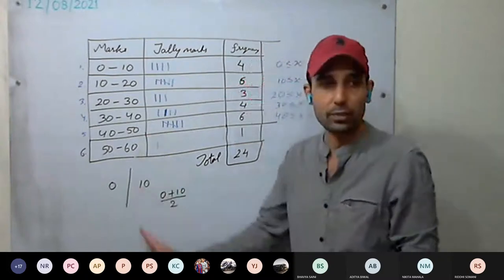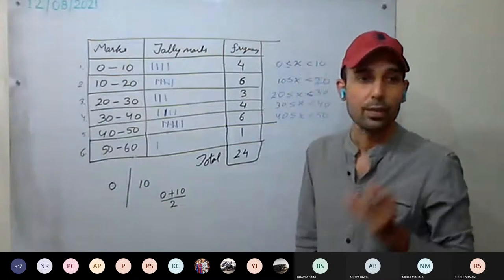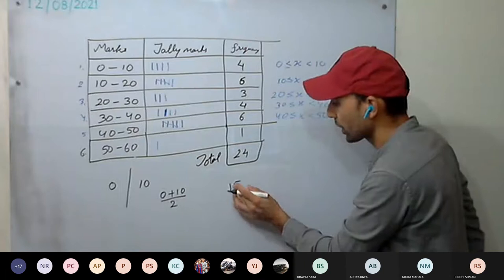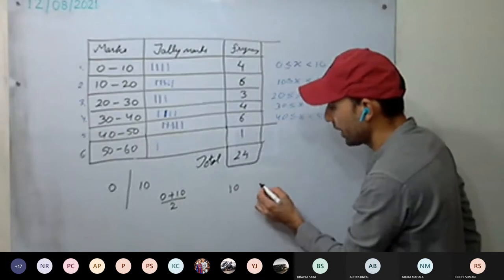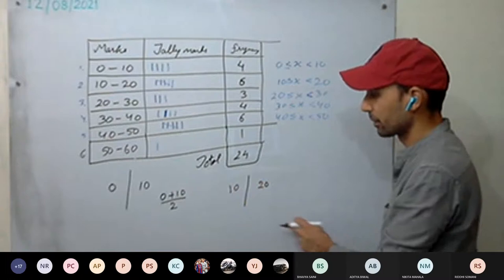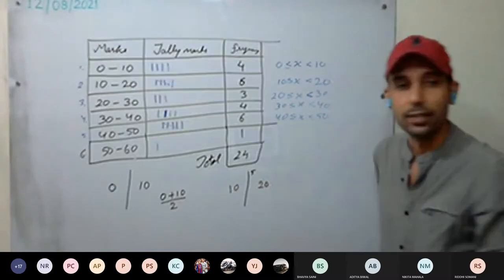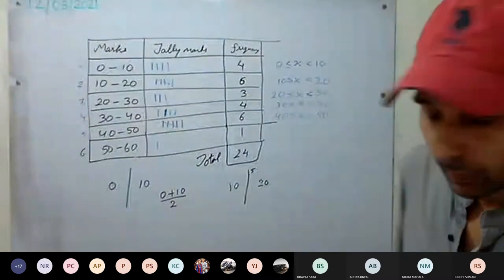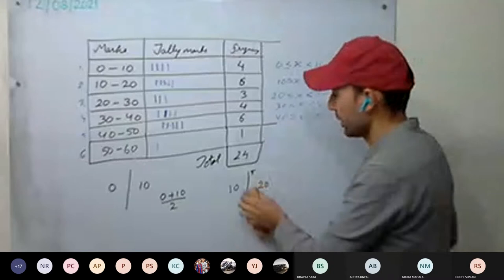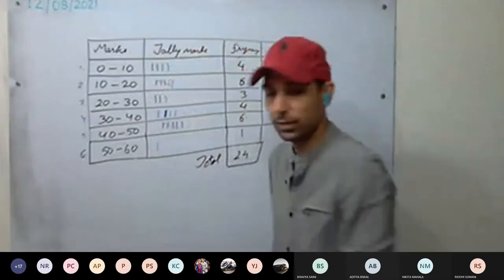The class mark gives the mean average value of the class interval. For 10 to 20: (10 + 20) ÷ 2 = 15 is the class mark — 5 units this side and 5 units that side. This mid value is called the class mark.